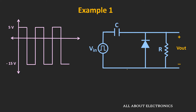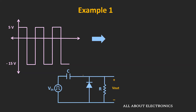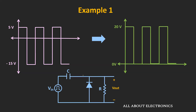As you may be aware, this positive clamper shifts the entire waveform towards the positive side. It shifts the entire waveform by the maximum value observed during the negative half cycle. Here, the maximum value during the negative half cycle is equal to minus 15V. That means the entire waveform will get DC shifted by 15V, and the overall output waveform will look like this.